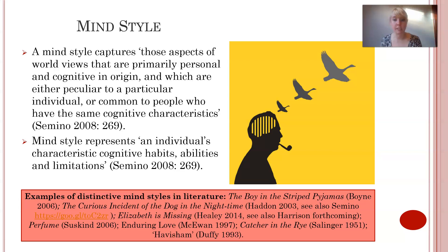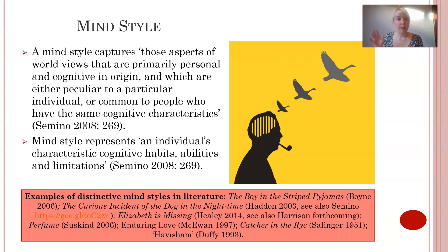Elizabeth is Missing is another good example. The narrator is an 85-year-old woman called Maud who has dementia, and as you progress through the text you can tell very quickly that perhaps Maud's memory isn't quite right — these characteristic cognitive habits, abilities and limitations come through in the way the text is written. We also see this in other texts to different degrees: Enduring Love, Perfume, Catcher in the Rye, the poem Havisham — where there is something distinctive about the way the narrator speaks to us that merits further stylistic investigation.